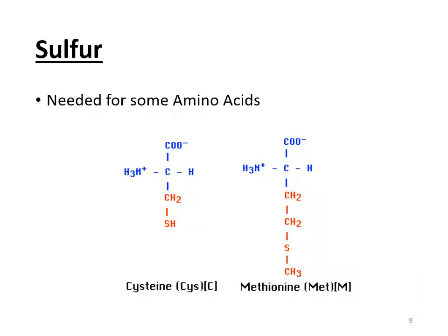Then we have sulfur. Circle the word methionine — you should remember this from the genetics lesson. Fmet was the initiator amino acid, which means methionine is the first amino acid of any protein. Without sulfur, which is part of methionine, cells would not be able to build any proteins. So sulfur is very critical.